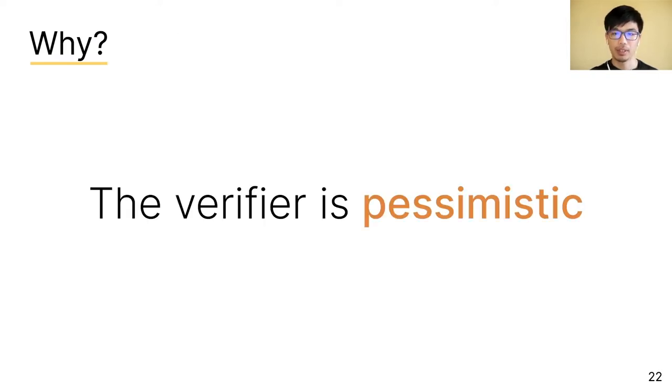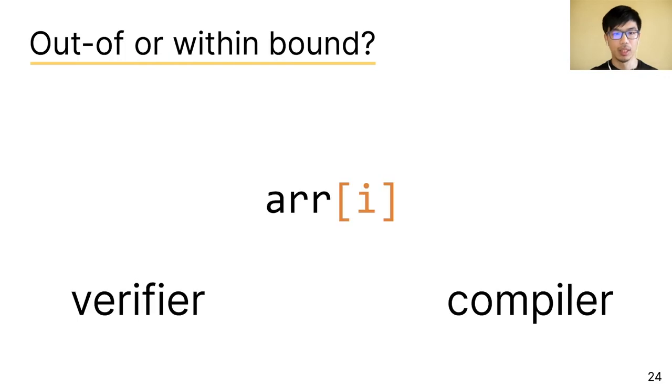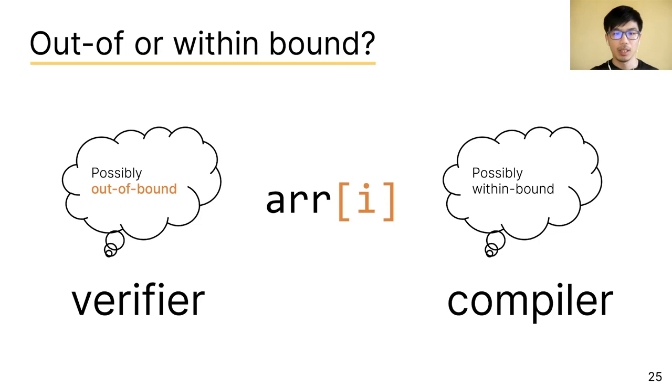So why does the verifier reject this code? Well, the reason is that the verifier is very pessimistic. Just as people can see half a cup of water differently, the verifier and the compiler also see array access very differently. The compiler will lean toward the access being within bounds, while the verifier will lean toward the access being out of bounds.